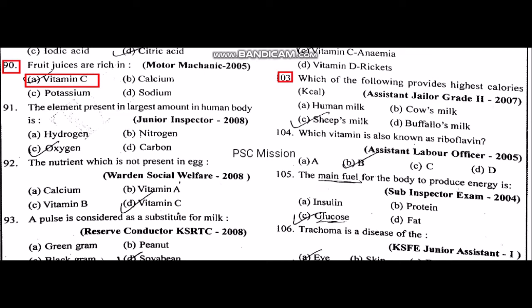The element present in the largest amount in the human body. The nutrient which is not present in the egg. Calcium, vitamin B, vitamin A and vitamin C — calcium, vitamin B and vitamin A are present, but not vitamin C.